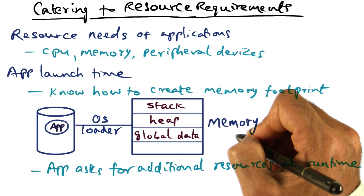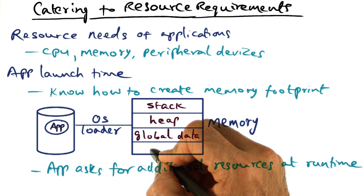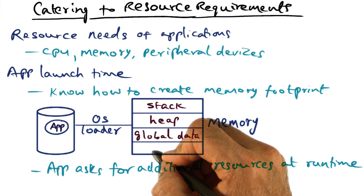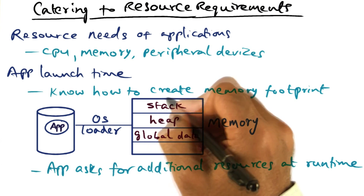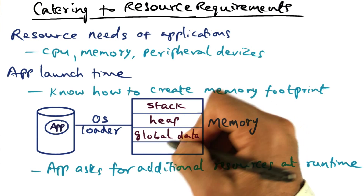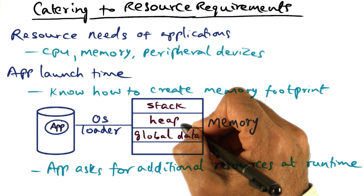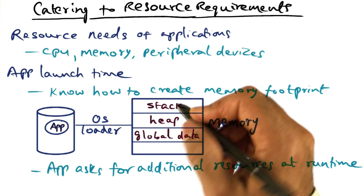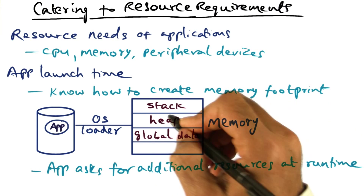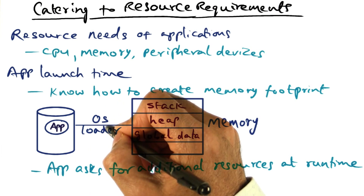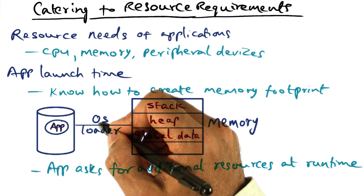This is what is called the memory footprint. The memory footprint of the program contains the code that needs to get executed on the processor, global data that it might be accessing, the stack that is needed when the program is making procedure calls, and the heap, which is the dynamic memory it might need during the course of execution.